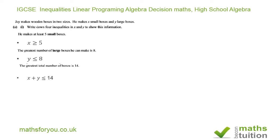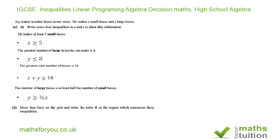And the last condition: the number of large boxes is at least half the number of small boxes. So y can be greater than or equal to half of x, giving us y ≥ x/2. So those are the four inequalities we've got. Moving on, the question says draw four lines on the grid and write the letter R in the region which represents these four inequalities.